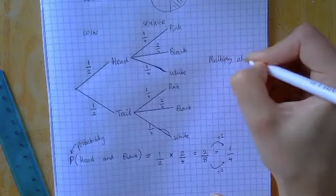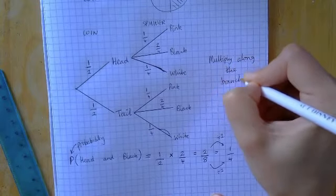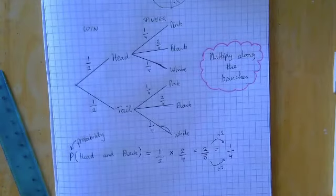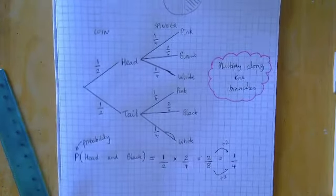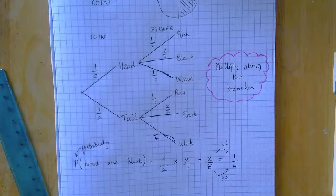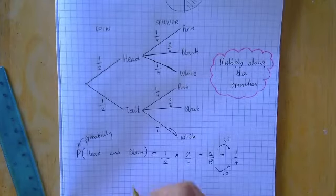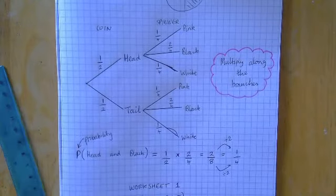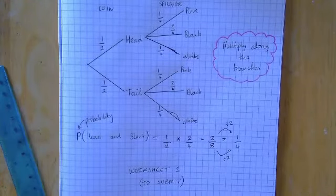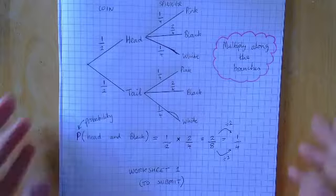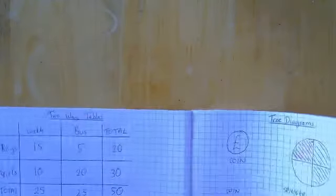So let's write down that rule: we multiply along the branches. If you can remember that, you'll be absolutely fine with tree diagrams. That's all you need to have a go. I'm going to do one more example, but feel free to stop there if you'd like. There's only one worksheet this week, which I'd like you to submit. I won't be offended if you stop here.